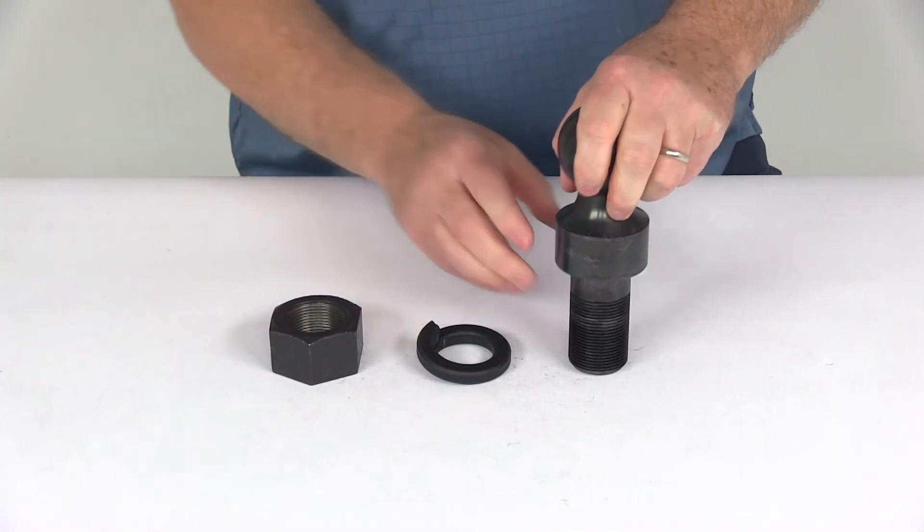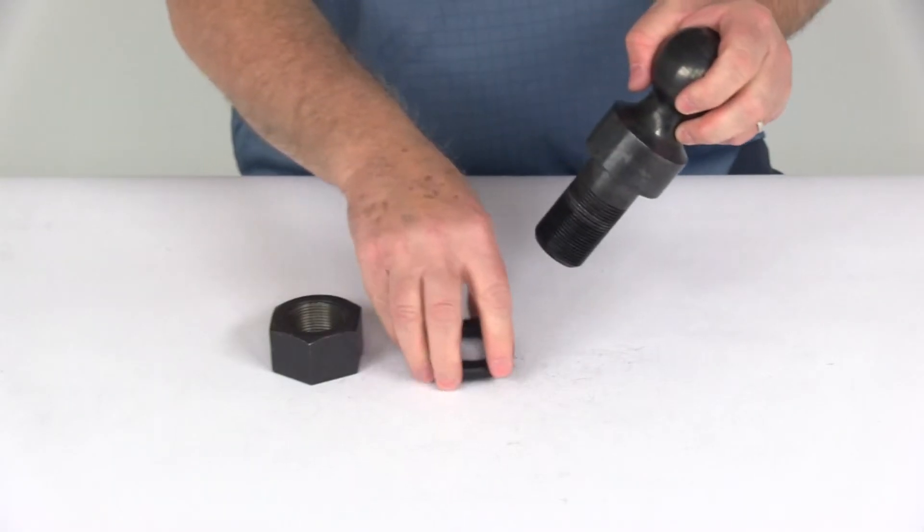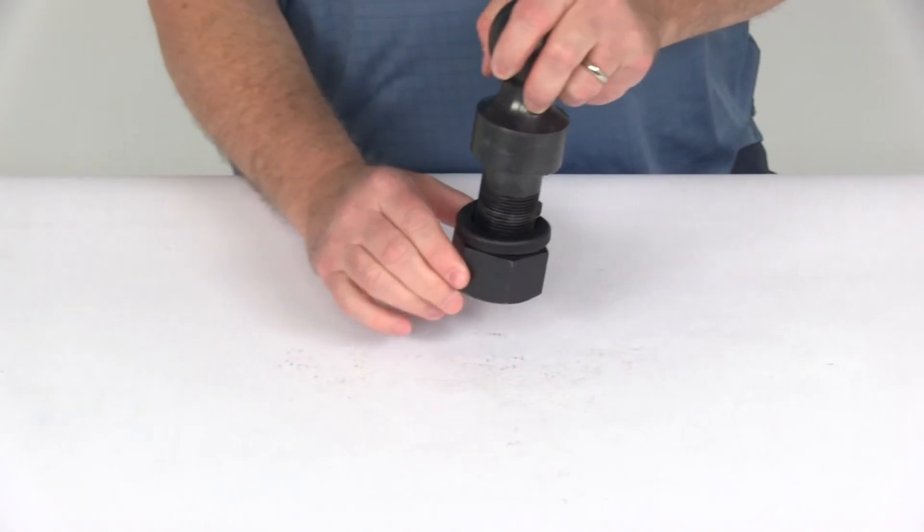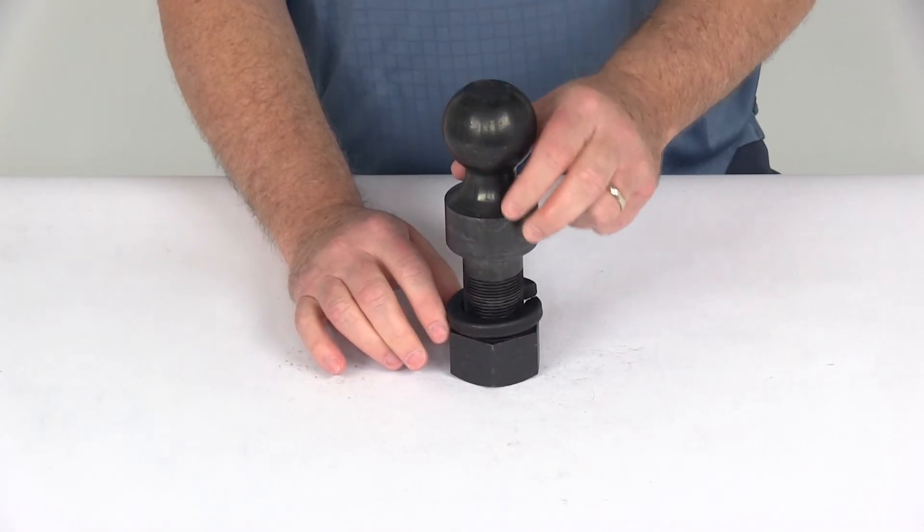To install this, drop the shank portion through the hole in the ball mount. Put your lock washer on, take the large nut, and tighten it down. Use the torque specs recommended for that application.